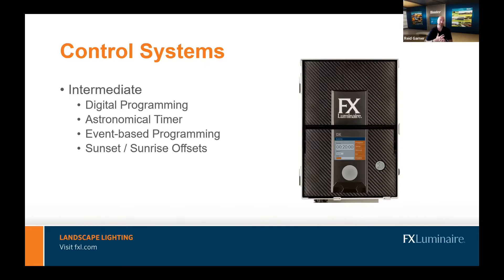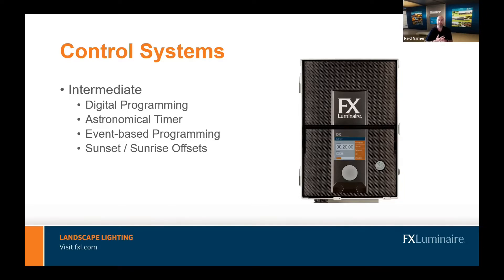Another cool feature of this intermediate controller is that instead of a photo cell or mechanical timer, it uses what we call an astronomical timer. You set the geographical location of where you are, and the controller knows when sunrise and sunset occur based on your location and time of year. You never have to adjust for daylight savings or for it getting dark earlier at different times — it automatically handles that. It's a set-it-and-forget-it type deal, which is a nice upsell to your customer.